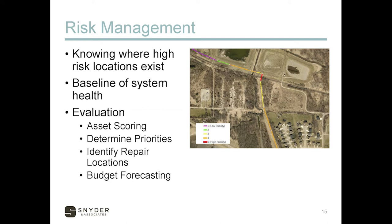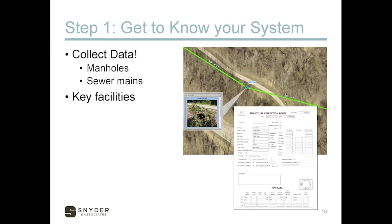A lot of operators know in general where the good and bad areas of town are, and that's very useful information. However, it's important to get a little more detailed on the data to use a risk management system so you can apply it objectively to all parts of the system. Data is the most important thing to know your system. You may not know you have an issue unless you get data on it — and that includes looking at manholes, sewer mains, and other key facilities like siphon crossings and pump stations.